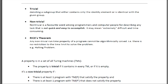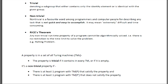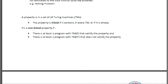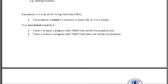Now let's see some examples of trivial and non-trivial property. Then you will understand what it means actually. So suppose a property is in a set of all Turing machines. Now if the property is trivial, it contains in every Turing machine, or if it is empty.